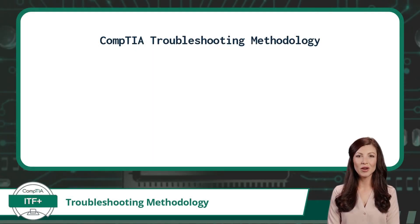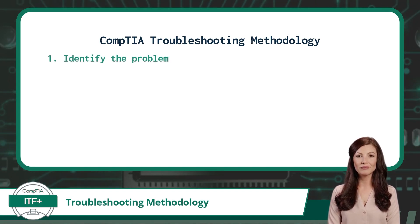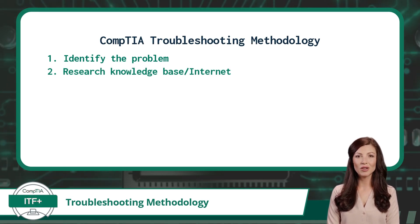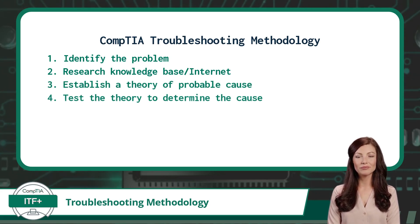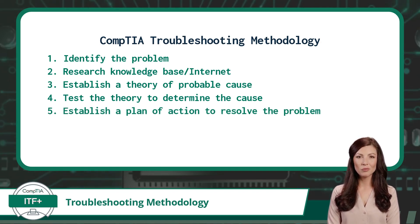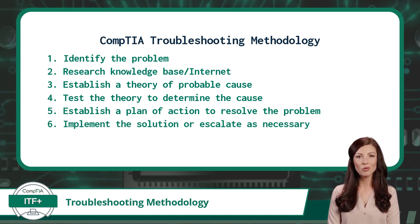CompTIA's troubleshooting methodology can be broken into eight steps. 1. Identify the problem. 2. Research knowledge base or internet, if applicable. 3. Establish a theory of probable cause. 4. Test the theory to determine the cause. 5. Establish a plan of action to resolve the problem and identify potential effects. 6. Implement the solution or escalate as necessary.